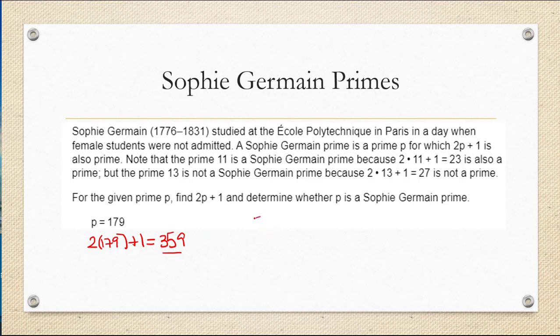Well, typically what we would do is start dividing 359 by prime numbers: 2, 3, 5, 7, 11, and so on. But to limit the amount of work we have to do, there is a little trick where we can take the square root of 359, which is approximately 18.9.